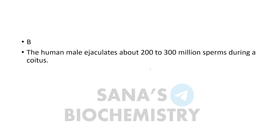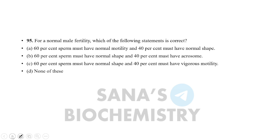The human male ejaculates about 200–300 million sperm during one ejaculation. For normal male fertility, which statement is correct? Options: 60% sperm must have normal motility and 40% must have normal shape; 60% must have normal shape and 40% must have acrosome; 60% must have normal shape and 40% must have vigorous movement; or none of these. The answer is option number C.